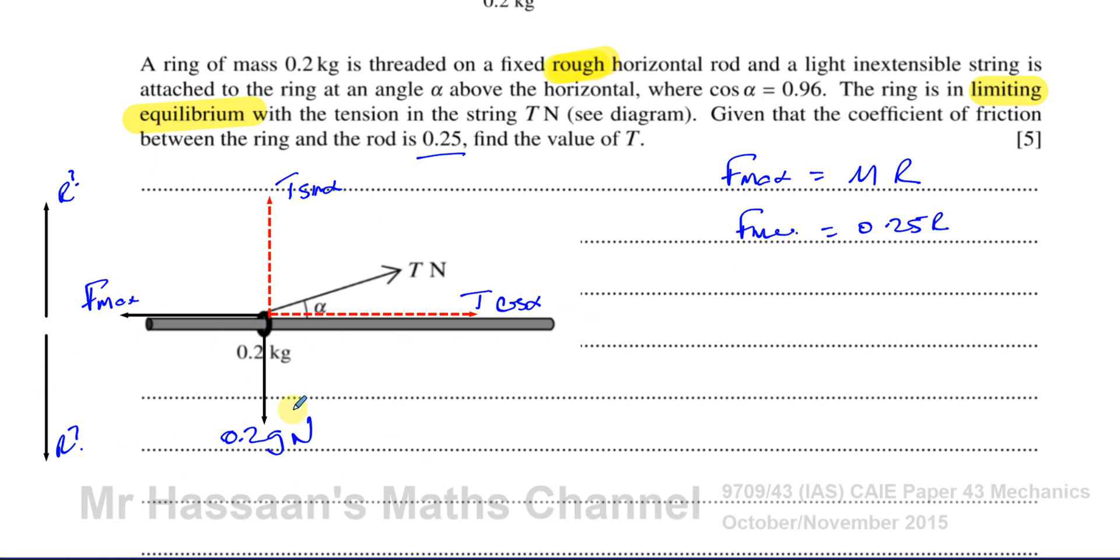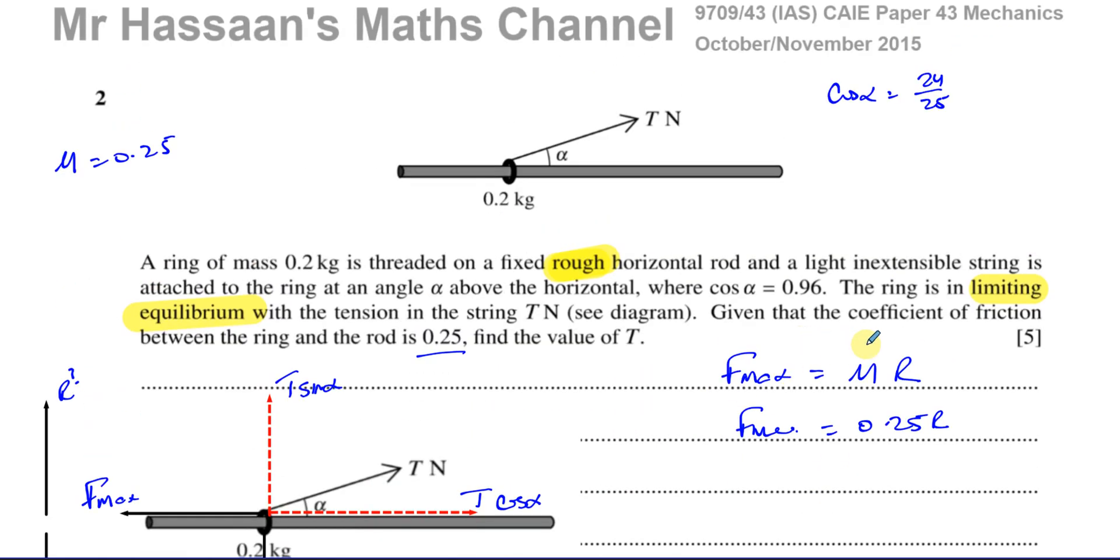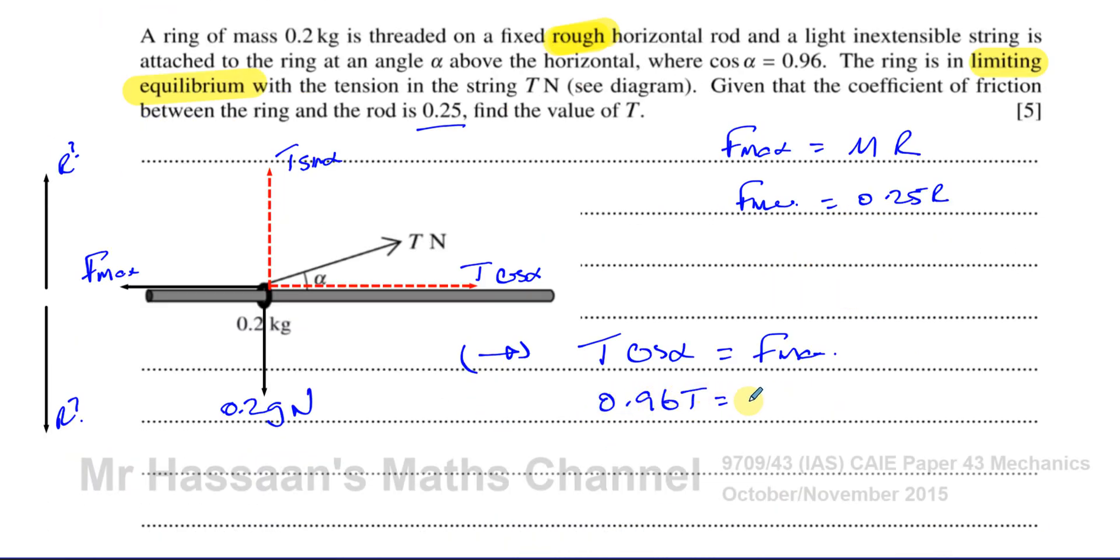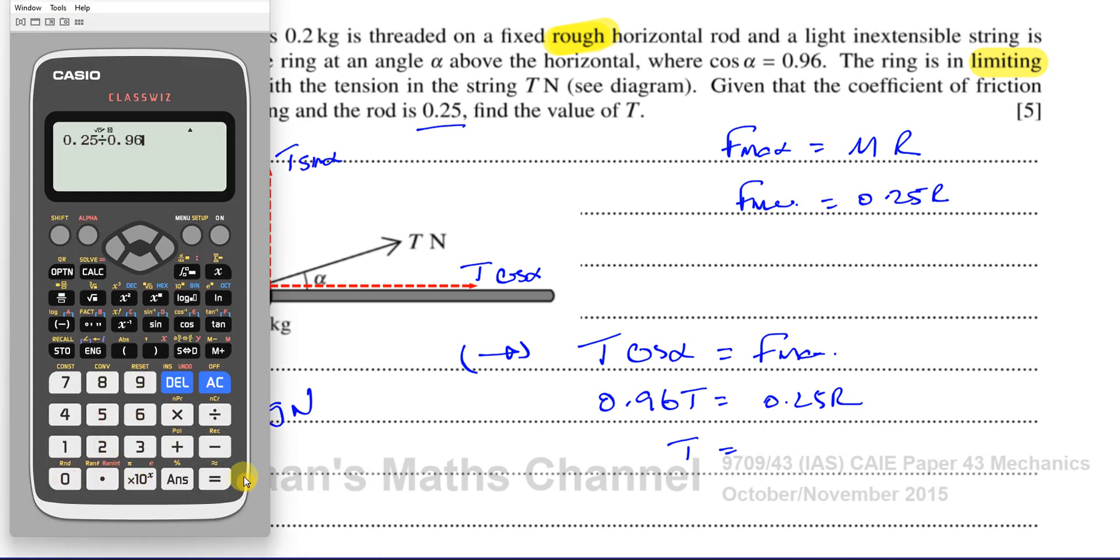Those are the forces acting on this, including the reaction force which either acts up or down. I'm going to resolve the forces acting horizontally and vertically. Horizontally, we have T times cosine alpha equals f max. We know f max is mu r, so T times cosine alpha equals mu r. We know cosine alpha is 24 over 25, which is 0.96. So I'll write 0.96 T equals 0.25 r. That gives you 25 over 96.